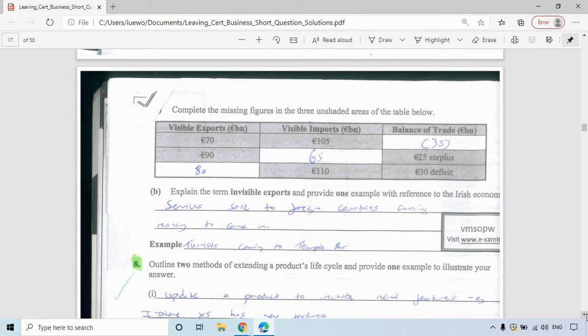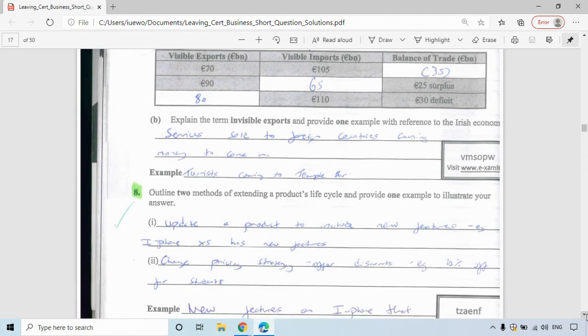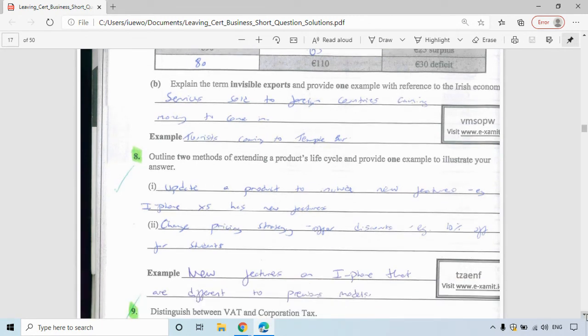Outline two methods of expanding a product life cycle with one example to illustrate your answer. You could update a product to include new features, like when the iPhone XS or any iPhone that comes out has new features. You can change your pricing strategy, offering discounts like 10% off for students, and hopefully they buy more. New features on an iPhone that are different to previous models would be an example.